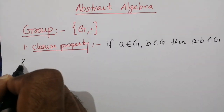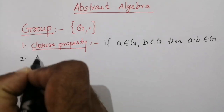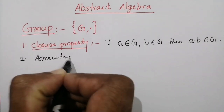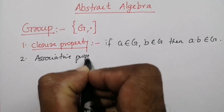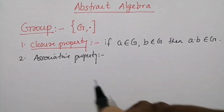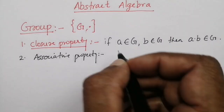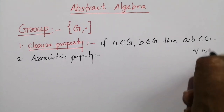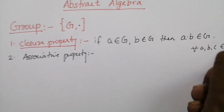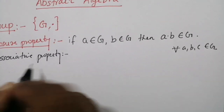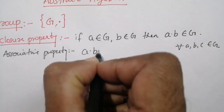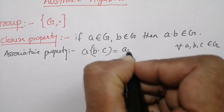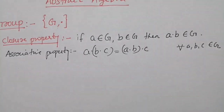The second property is the associative property. In the associative property, for every element a, b, and c belonging to G: (a·b)·c = a·(b·c).